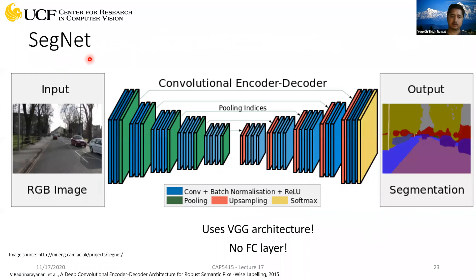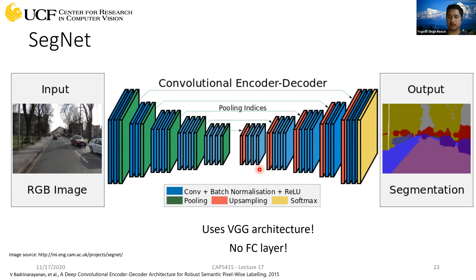Then there was another network called SegNet, which is very popular — not just for semantic segmentation, but for any task requiring going from one domain to another, such as image-to-image translation. For example, if you have an input image and want to draw a sketch of it. Wherever you need that kind of auto-encoding, the SegNet-style structure is very powerful.